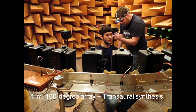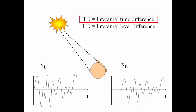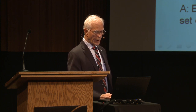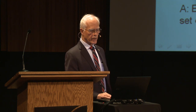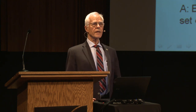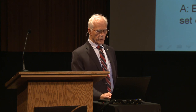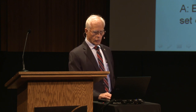This is a free-field environment with no reflections. The interaural time difference goes from something a little less than a millisecond or 1,000 microseconds up to positive 1,000 microseconds — all the way from minus 90 degrees to plus 90 degrees. The interaural phase difference is what you get if you multiply the interaural time difference by the frequency. Since we have three different frequencies, we have three different curves for the interaural phase difference.